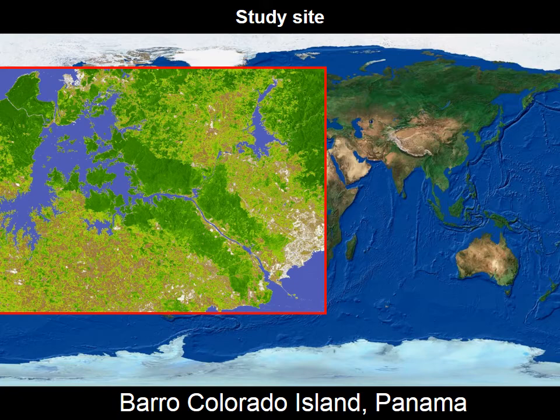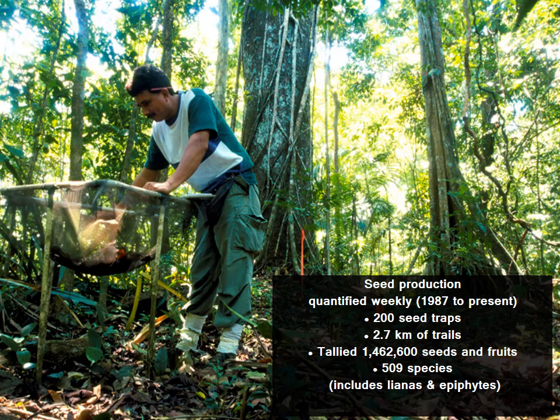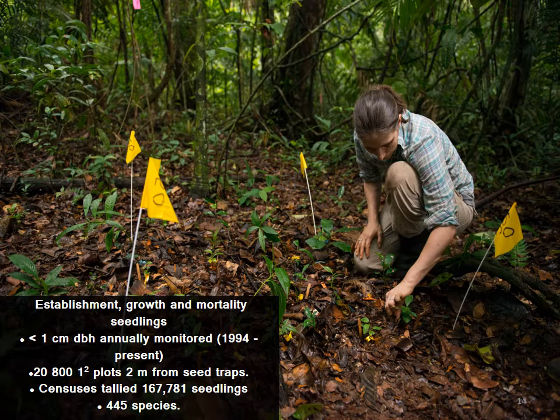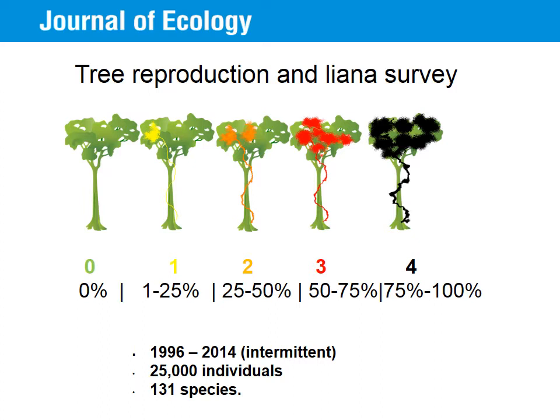We set out to answer these questions by examining liana-tree interactions on Barro Colorado Island in Panama. On this island, scientists have been following the fate of tree species for over three decades in a plot with an area of about 50 hectares. Seed production has been tallied weekly in 200 seed traps from 1987 onwards. The fate of seedlings has been followed in over 20,000 seedling plots since the mid-90s. And all tree stems larger than one centimeter diameter at breast height have been mapped and followed every five years since 1980.